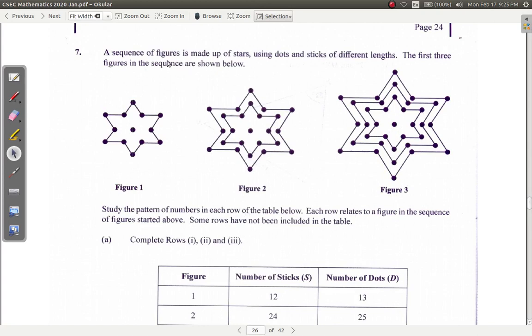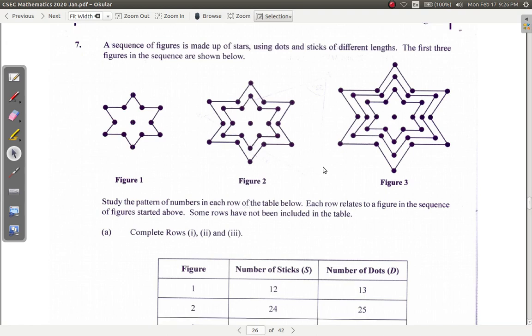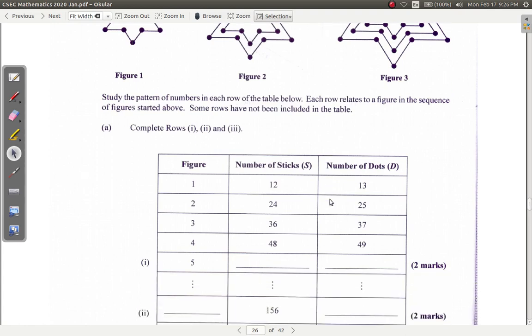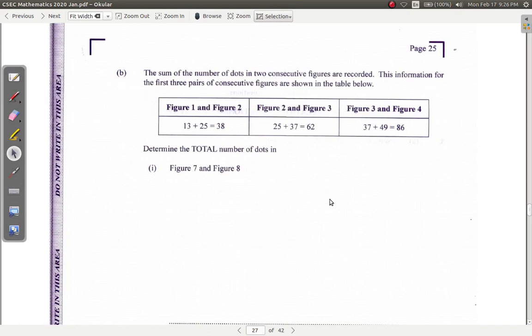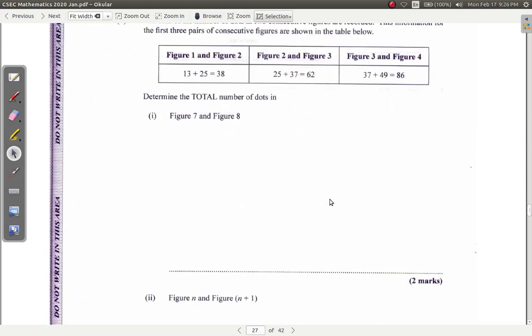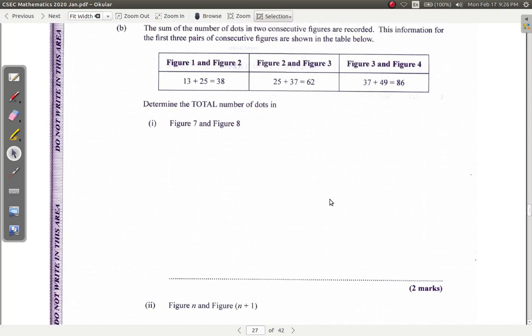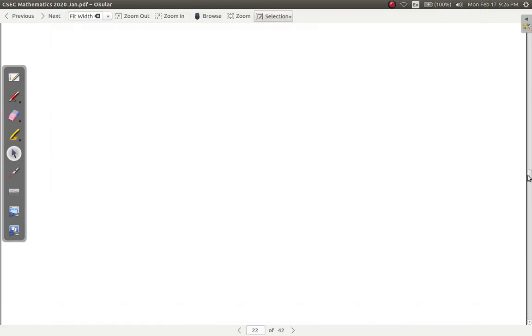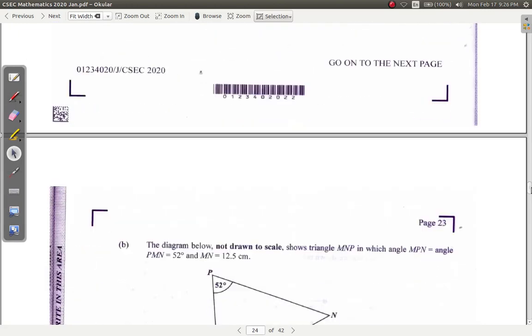Question 7: You have a sequence of figures made up of stars, dots, and sticks of different lengths. Each row relates to the figure in the sequence above. Some rows have not been included in the table, so you must fill in the missing rows and come up with some formula to determine the total number of dots. So that was question 7.